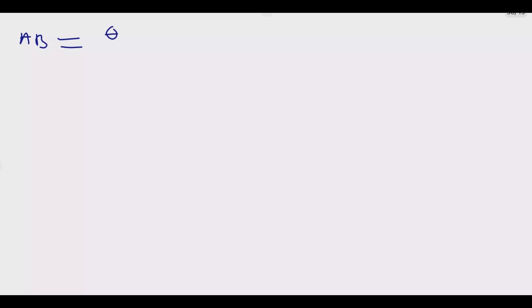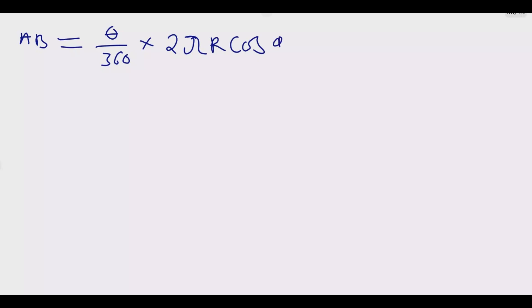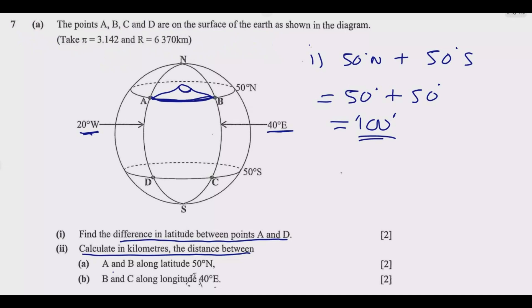The distance AB equals theta over 360, multiplied by 2 pi r times cos(alpha), where alpha is the latitude we are moving along. In this case, we are moving along latitude 50 degrees north, so alpha is 50 degrees. Now let us find the angle theta: it equals 20 degrees plus 40 degrees, giving 60 degrees.